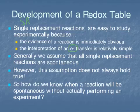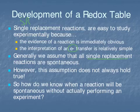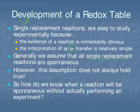Now in the past, we have assumed that all single replacement reactions are spontaneous and occur, but that is actually not true. There are some single replacement reactions that will not occur spontaneously — it could occur, but we need to give it a little bit of a push. So how can we decide which reactions are going to be spontaneous and which ones will need a little help? We're going to need to look at a reduction table.